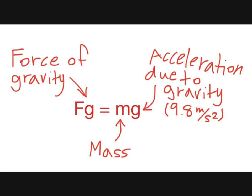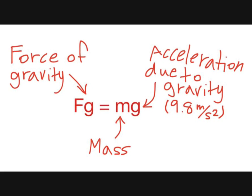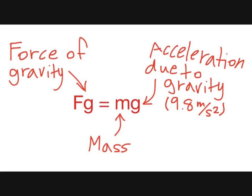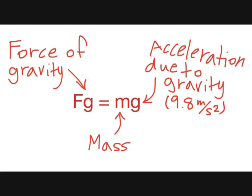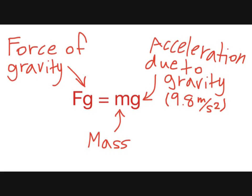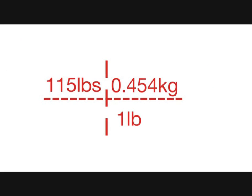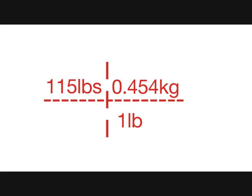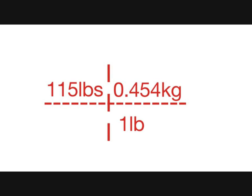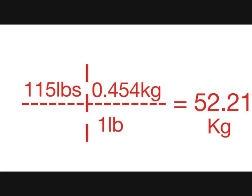and G represents acceleration due to gravity, which is always the same. Since you know Amina's weight in pounds, which is 115 pounds, you can find her mass by converting pounds to kilograms. And since you know the acceleration due to gravity, which is always 9.8 meters per second squared, we can plug it into this equation to find her Fg. First, let's convert pounds to kilograms. There are 0.454 kilograms in one pound. So multiply them together, and you get 52.21 kilograms for Amina's mass.